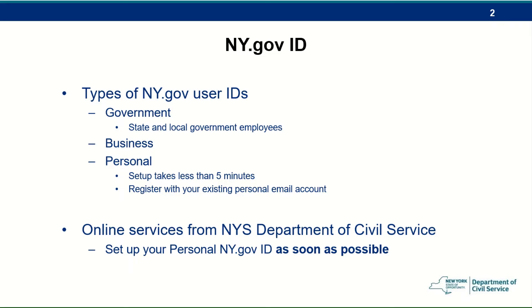To set up a Personal NY.gov ID, you need to have a personal email address. If you do not have a personal email account, you can create an email address for free at sites like gmail.com or yahoo.com. Be sure to write down your email address and use a password that is strong but easy for you to remember. You will need access to this personal email account to complete your registration process for your NY.gov ID.